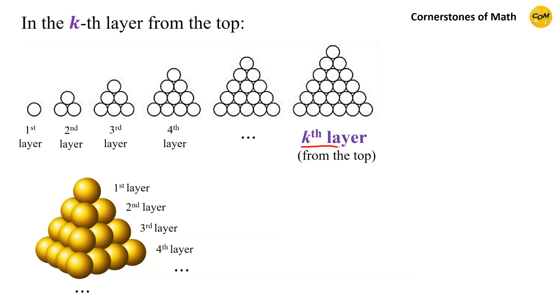So let us consider the kth layer from the top. In this layer, the balls are arranged in a triangular manner, where each side consists of k balls. And if we count the number of balls, in the first row, we have one ball. In the second row, we have two balls. In the third row, we have three balls. And we keep going. And in the bottom row, we have k balls.